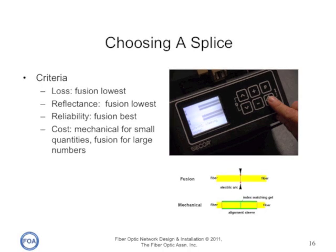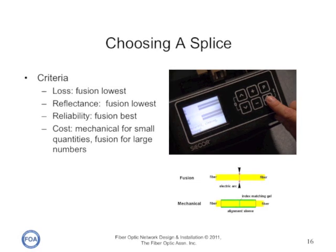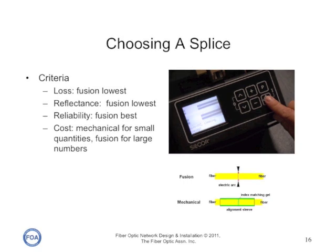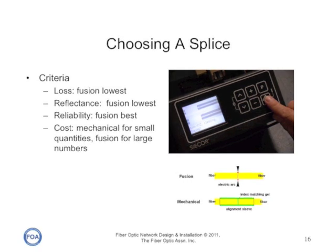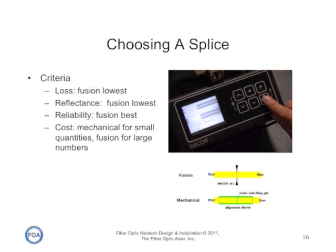When it comes to splicing, you generally choose the splice type according to how many you're going to make. If you're doing a large number of splices, a fusion splice will be the least expensive and will also give you the lowest loss in reflectance and the highest reliability. But if you're only doing a few connections, a mechanical splice will be less expensive.